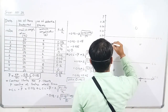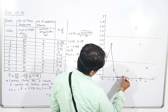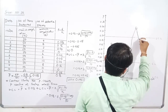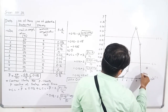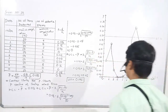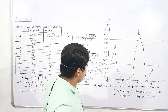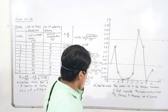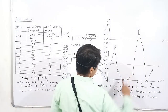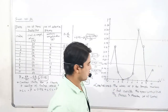Now join the points: 1 to 2, 2 to 3, 3 to 4, 4 to 5, 5 to 6, 6 to 7, 7 to 8, 8 to 9, and 9 to 10. Okay, clear? Conclusion: the value of P for sample number 7 exceeds the UCL. The process is therefore out of control. Okay?